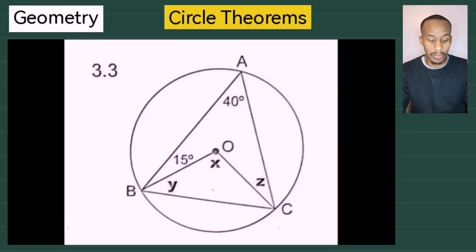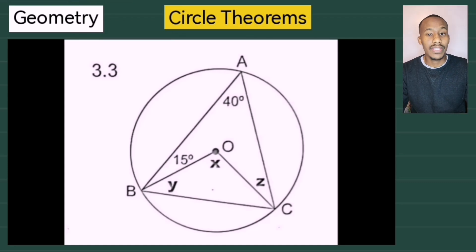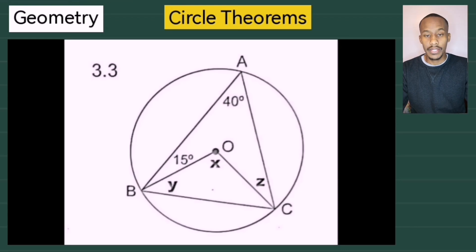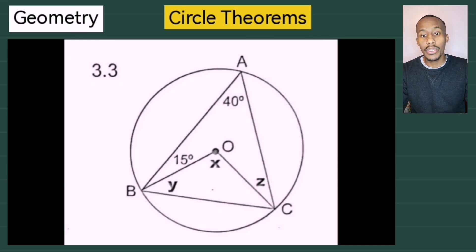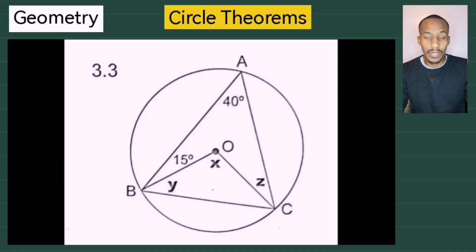Let's start with our first example. You can ignore the funny numbering on the side — I've extracted these questions from the Answer Series textbook, so the numbering jumps around. For example number one, we have a circle going through points A, B, and C forming a triangle. Point O is the center. Angle A is 40 degrees and angle ABO is 15 degrees. You need to find angle X, Y, and Z. Pause the video now to try it.